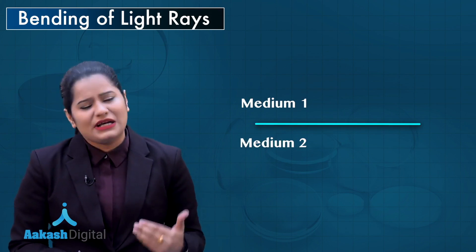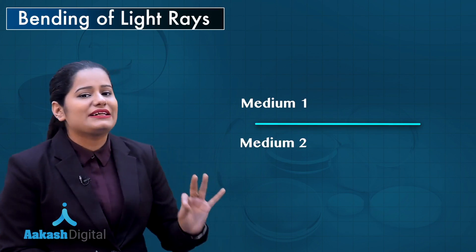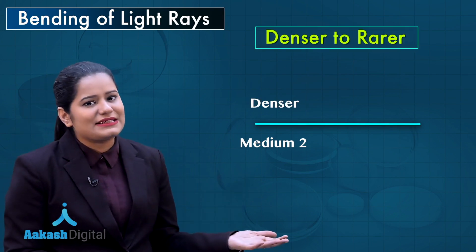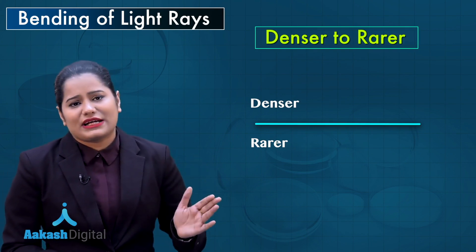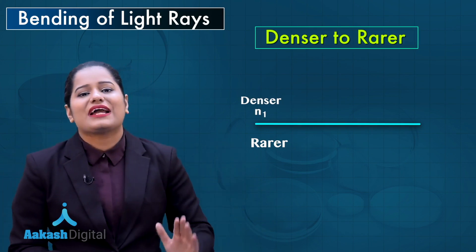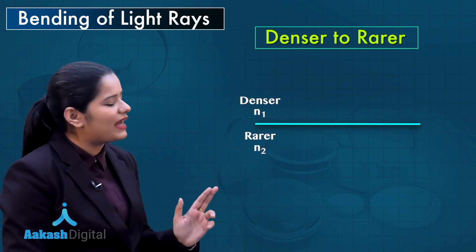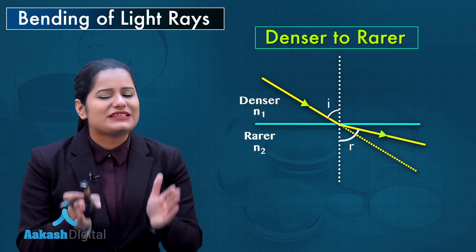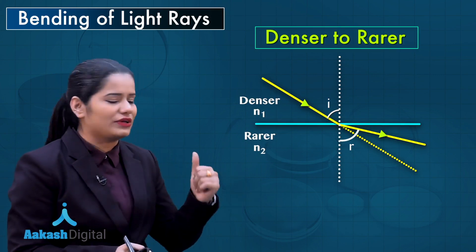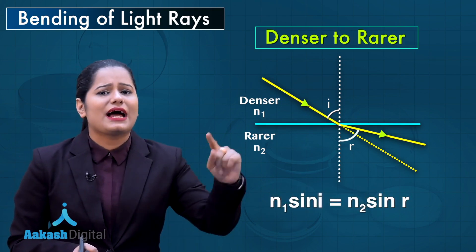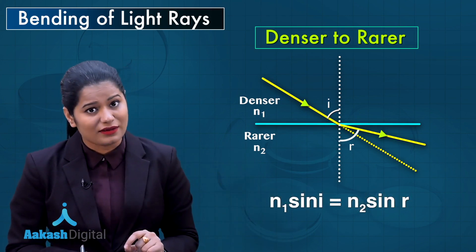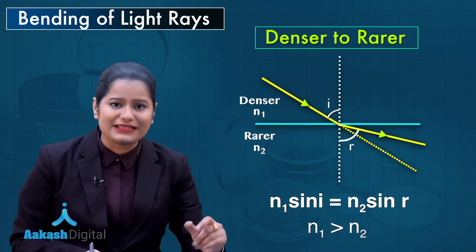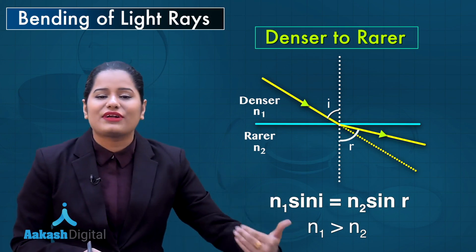I have taken up this boundary separating medium 1 and medium 2. First, we will take the case when light is traveling from the denser to the rarer medium, so medium 1 is denser and medium 2 is rarer. Let the refractive index of medium 1 be n1 and medium 2 be n2. Applying Snell's law at the boundary: n1 sin i = n2 sin r. Here n1 is greater than n2 because medium 1 is denser.